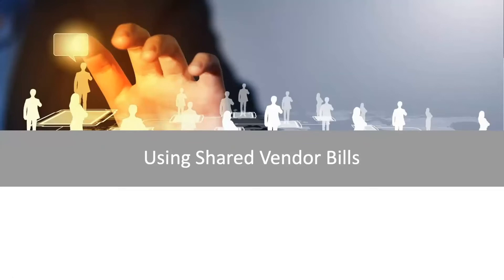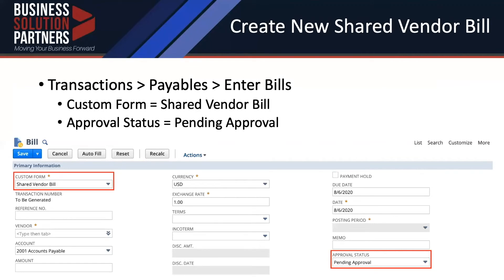Now let's get into the use of shared vendor bills. To create one, follow the standard navigation for creating a vendor bill: Transactions > Payables > Enter Bills. Make sure you change the form to the shared vendor bill form and set it to a pending approval state. The reason is that when the vendor bill is approved, it creates the allocation journal entry. If you continue making adjustments, there will be reversal journal entries and new journal entries. So until the distribution weights are finalized, keep it in a pending approval state to avoid unnecessary reversal journal entries.